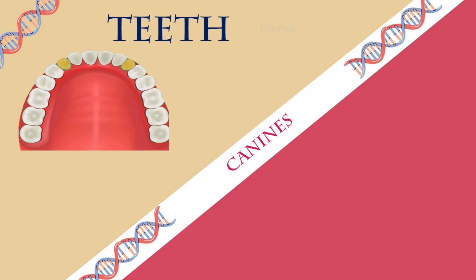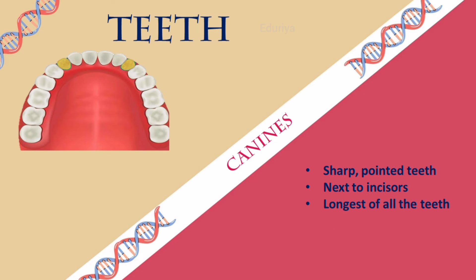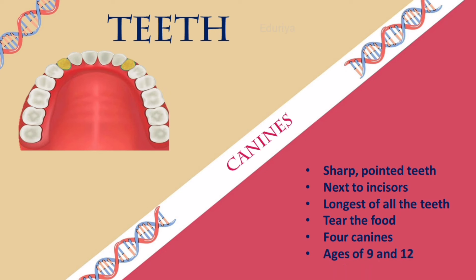Canines are the sharp pointed teeth that are next to the incisors. Canines are the longest of all the teeth and are used to tear food. Both children and adults have four canines. Children usually get their first permanent canines between the ages of 9 and 12.